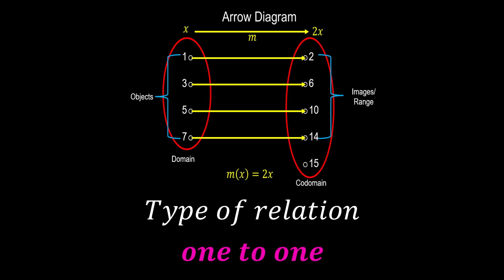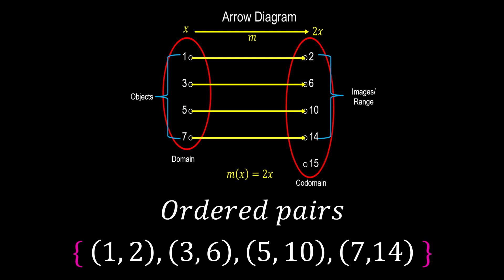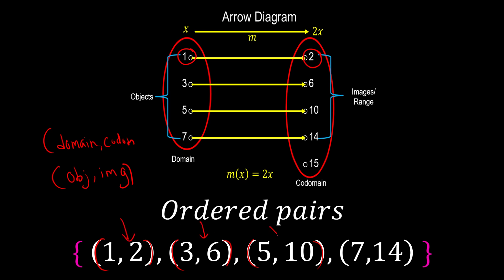Of course we can use other ways to represent functions — the arrow diagram is only one of them. Next, we learn how to represent functions as ordered pairs. An ordered pair puts a couple into one coordinate, like a coordinate system where we pair the domain and codomain. Object maps to image: (1, 2), (3, 6), (5, 10), (7, 14) — and we put all of these into a set. This is how we represent functions using ordered pairs.